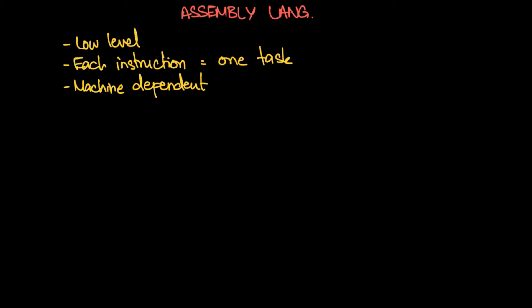Assembly language is dependent on the instruction set. The instruction set of a computer is basically a set of instructions that the computer can execute — stuff that it can do. If you try to make it do something that is not in its instruction set, it won't be able to do that. Assembly language limits you to work within the instruction set that the computer has, which makes it machine dependent.